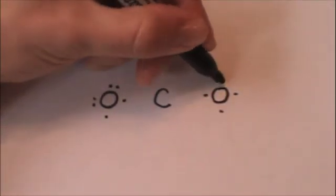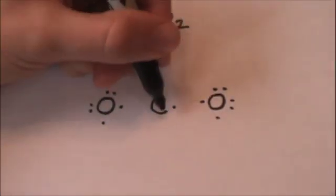One, two, three, four, five, six. We knew that because it was in group 6A. Carbon is in group 4A, so it has one, two, three, four valence electrons.